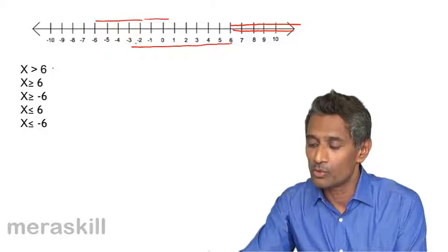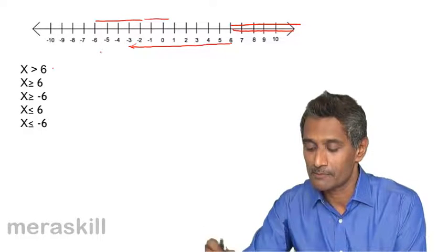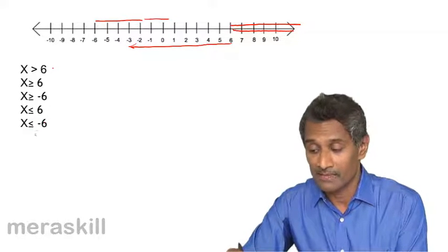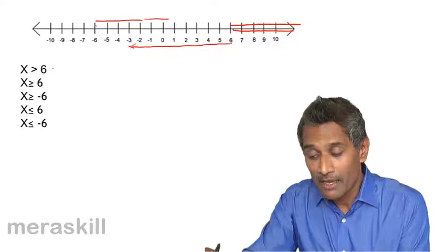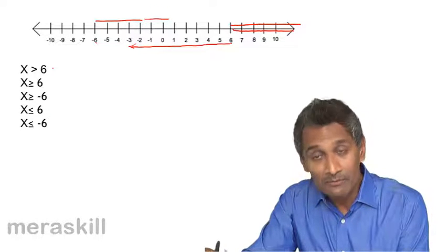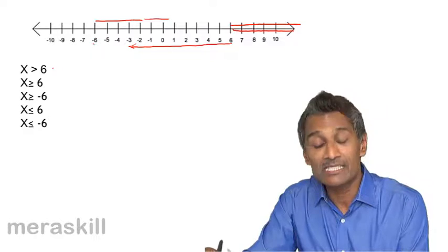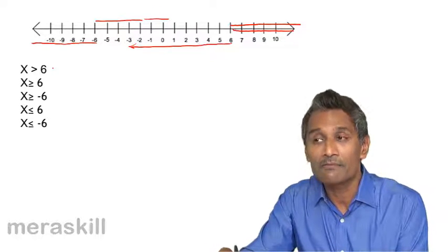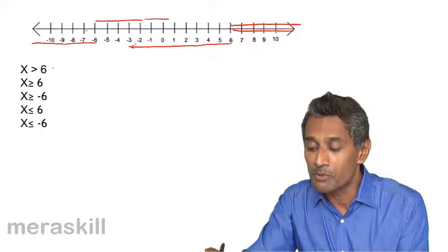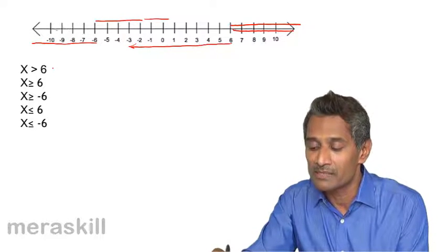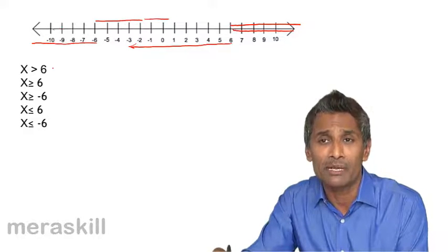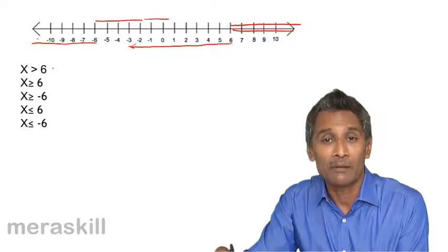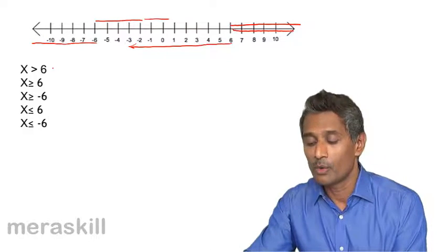On the contrary, you have x is less than or equal to minus 6. So we look at minus 6 here. We start from minus 6, and then since it is less than or equal to, from here we move towards the left. So all these numbers could be minus 7, minus 8, minus 9, minus 10, or anything in between, like minus 9.23675. All these numbers will be less than minus 6.